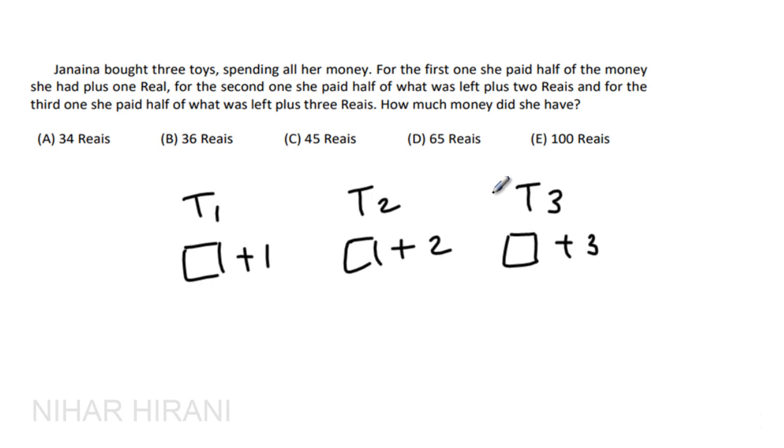Now as per my opinion, the easiest way to solve this is trial and error. It means you assume that any of the choices is correct and start working on it. So let's start with this choice.